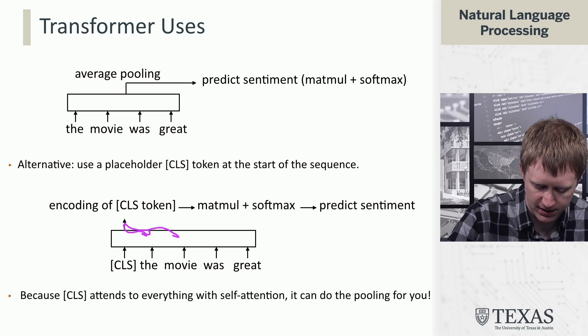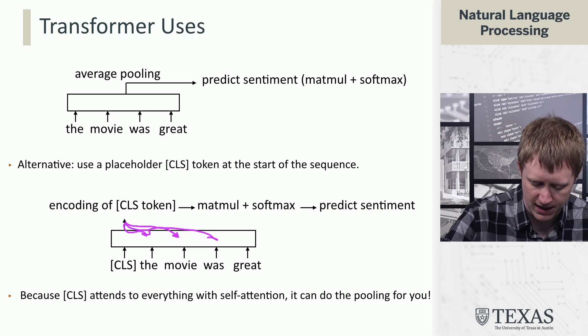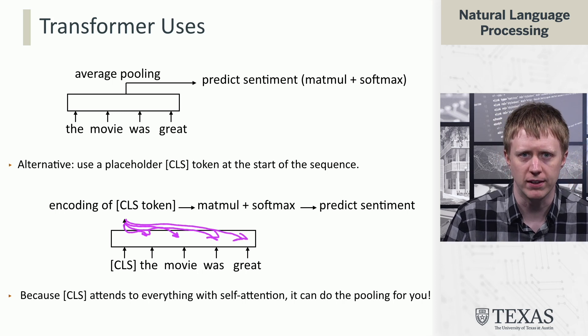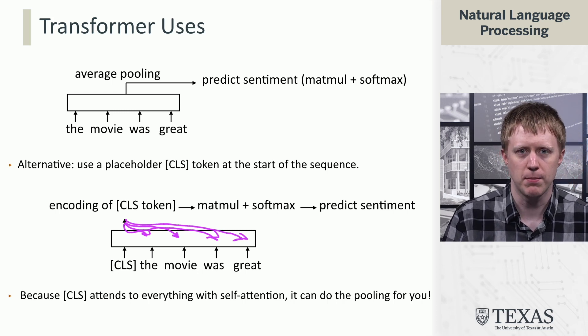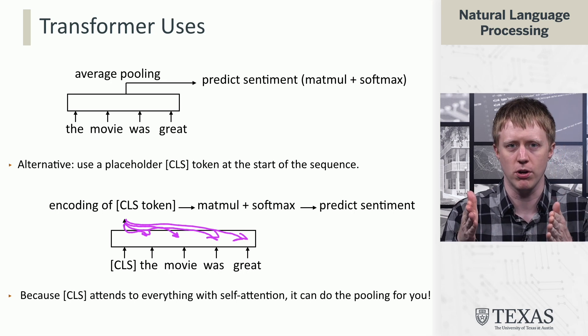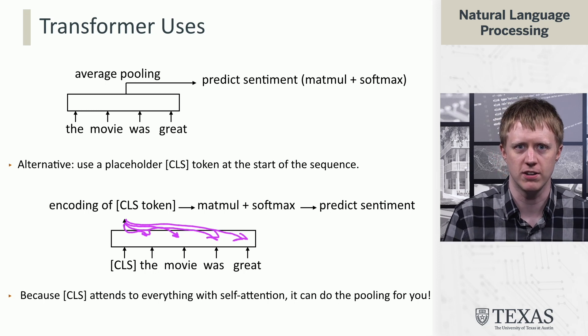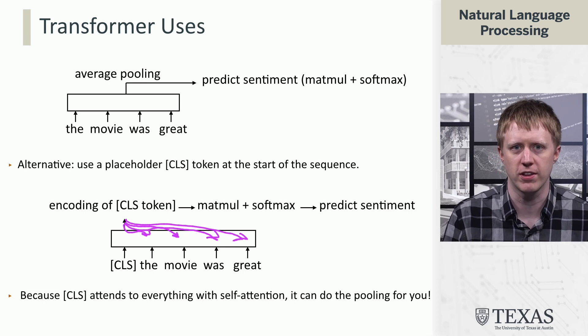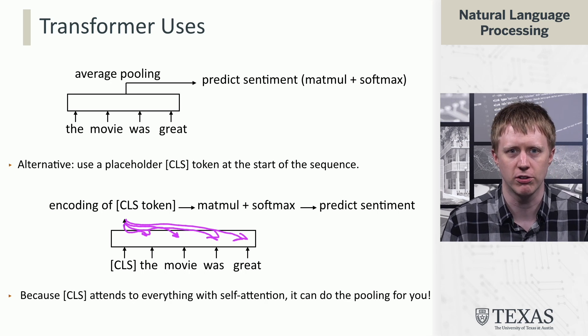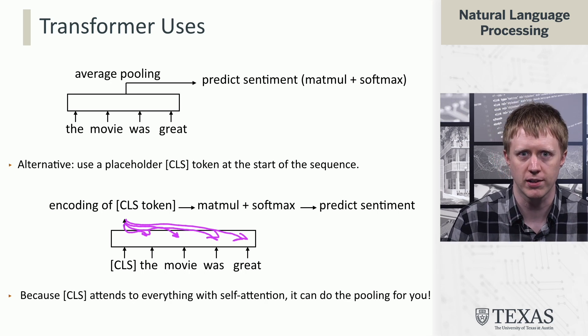What that means is that this CLS embedding at the very end of the network here is attending to all the other tokens. And we might imagine that the model can learn distribution of what tokens are important for this particular classification decision. So it's actually a little bit smarter than average pooling because this final layer is going to learn how to mix the information together for us.